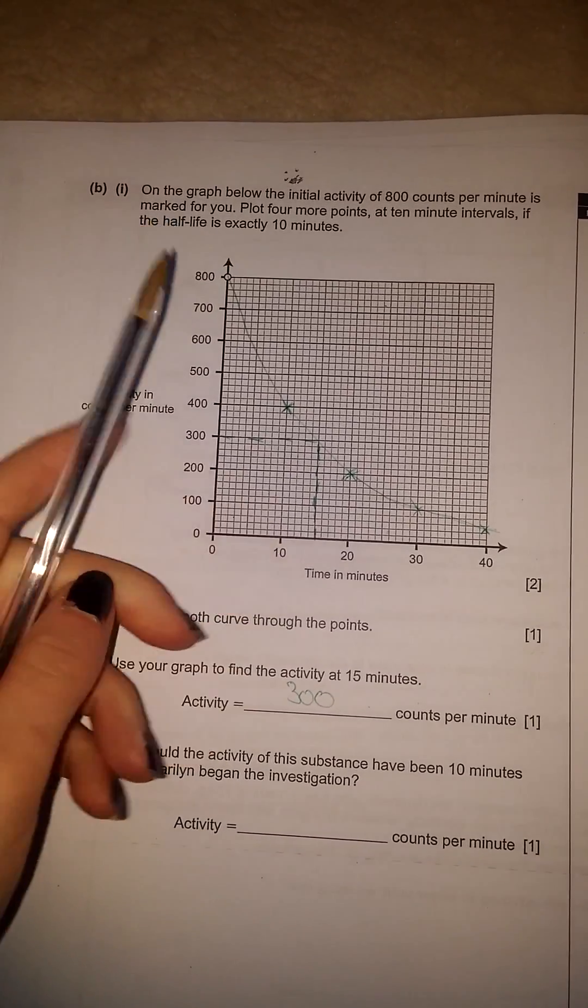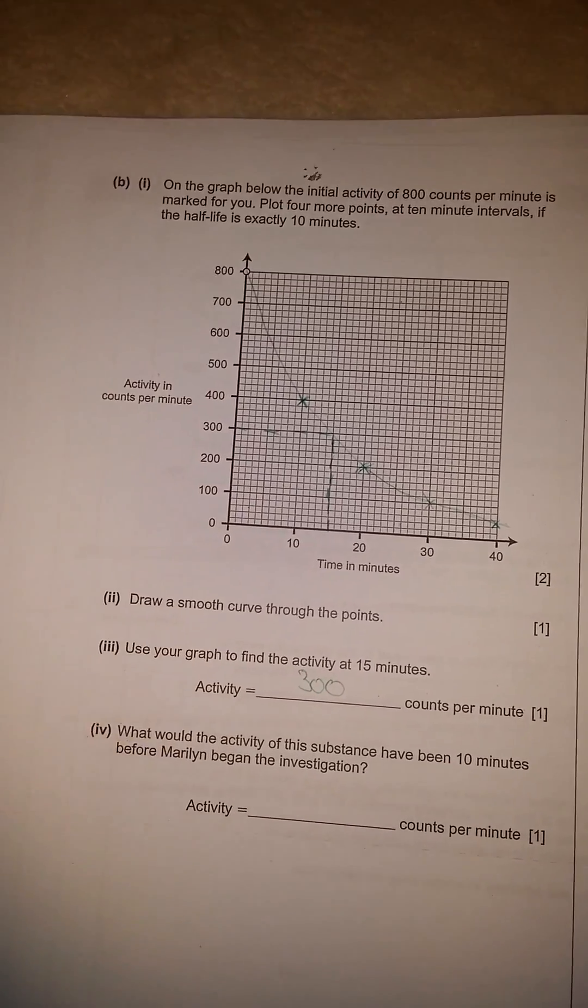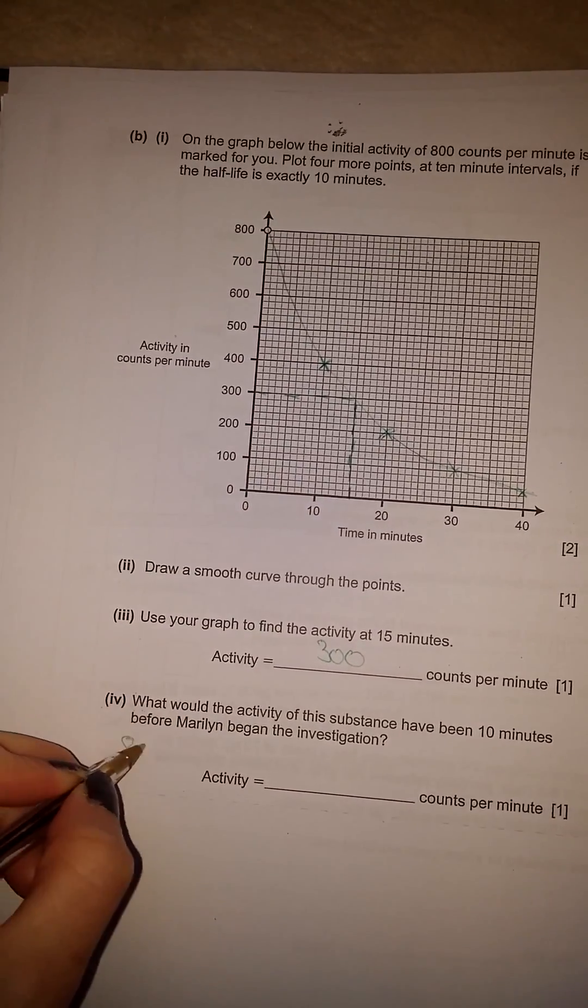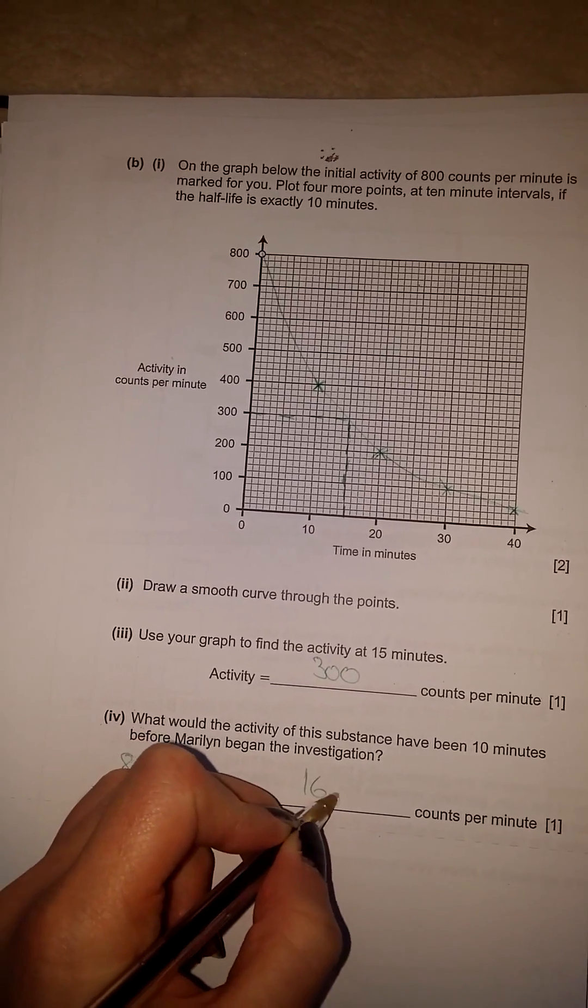Because remember, every 10 minutes, it divides by half. So 10 minutes before, you're doing the opposite. Instead of dividing by 2, you're multiplying by 2. So it's 800 multiplied by 2, which is 1,600 counts per minute.